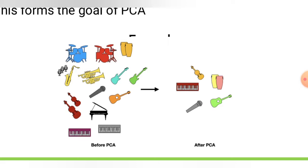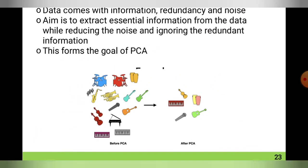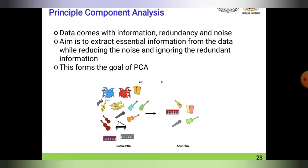With the help of geometry selection procedures, before PCA you can see a lot of instruments, and after PCA only a selected set of instruments are chosen by Principal Component Analysis. This is the general methodology of how it works.